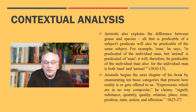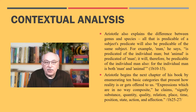In chapter three of the Categories, Aristotle returns to the first group of things while explaining the difference between genus and species. He points out that all that is predicable of a subject's predicate will also be predicable of the same subject. For example, he says, I quote, 'man is predicated of the individual man, but animal is predicated of man; it will therefore be predicable of the individual man also, for the individual man is both man and animal.'